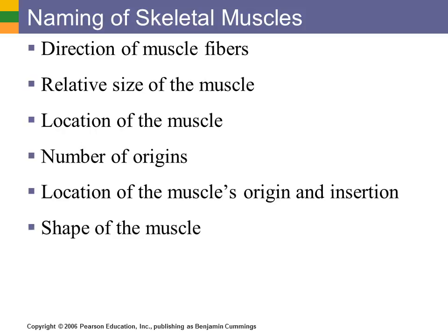Some muscles are named for their shape — for example, deltoid means triangular, and the deltoid muscle on your shoulder has a triangular shape. Finally, muscles can be named by their action. In our class we'll deal with flexors and extensors of the fingers and hands. For example, extensor digitorum longus is a muscle that extends your fingers and is long compared to the others. Terms like maximus, minimus, brevis, and longus are all relative descriptions — there's no definite length that earns the name maximus or minimus; it's just how early anatomists described the muscles relative to each other.